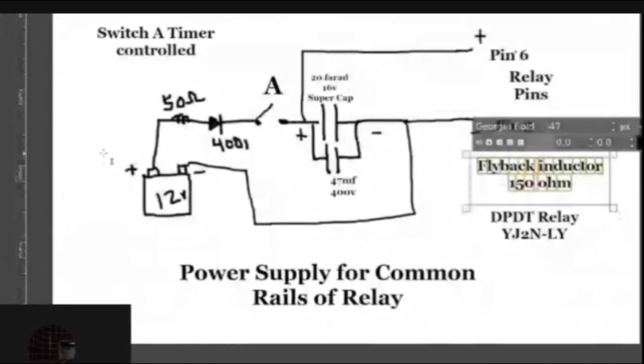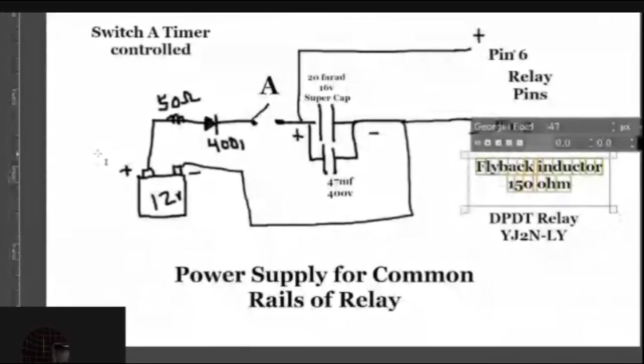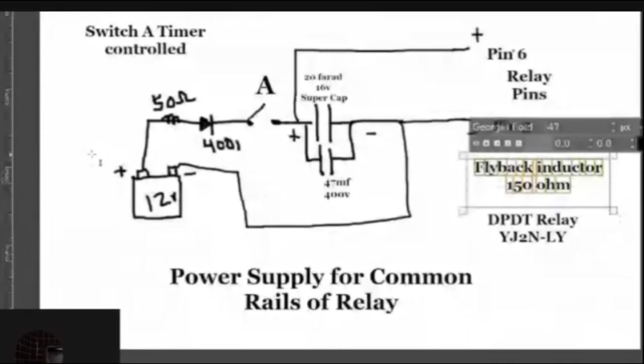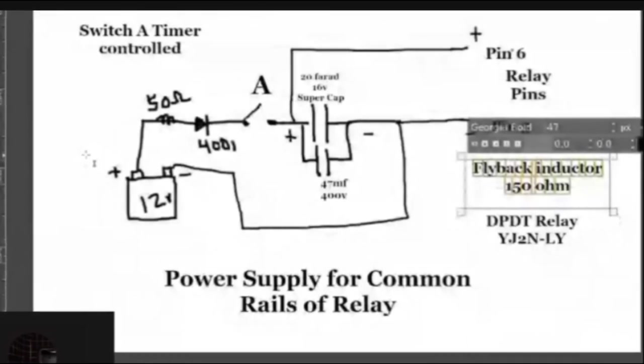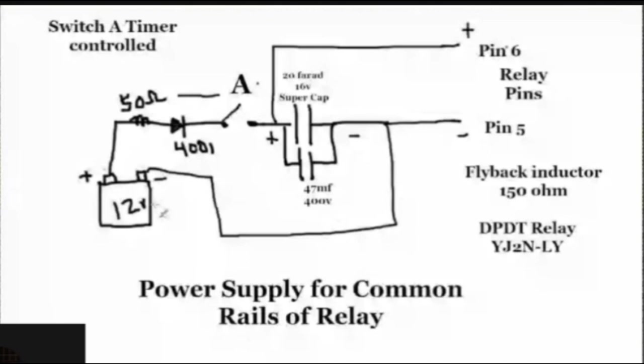When you dump the flyback into a capacitor and then store up some amps and lower the voltage some, then you push it over to a battery. How well is that battery going to capture that pressure compared to the flyback pressure?